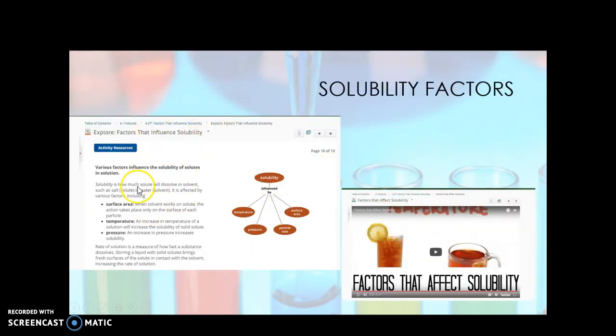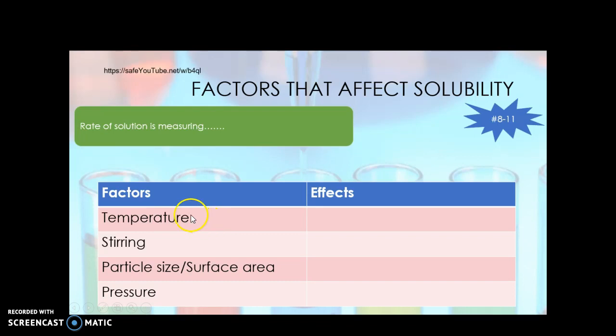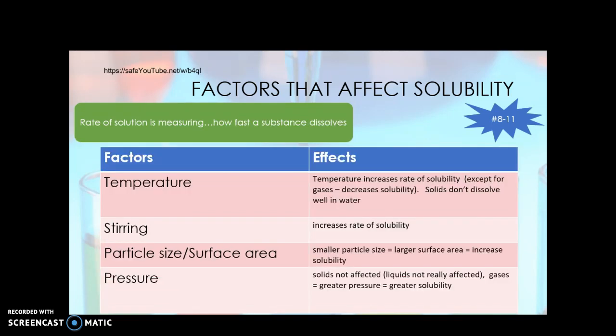In your reading, the 6.07, it will talk about some of these factors. And there is this video that you really, really need to watch. Really good video. Factors that affect solubility. But you will see that there are factors that affect the rate. So the rate of a solution is measured by. Make sure you can answer that question. And then what happens when you change the temperature. When you stir. When you change the particle size or the surface area. When you change the pressure. So go in, watch that video, and go through the reading. Take some notes. Pause the recording to help you out. Here are my notes.